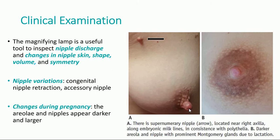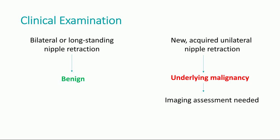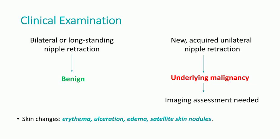Don't forget about the changes that occur during pregnancy, as in this picture where a darker areola and nipple with prominent Montgomery glands might be seen due to lactation. Characteristically, a bilateral or long-standing nipple retraction is benign, while the presence of an acquired unilateral nipple retraction implies an underlying malignancy and should be evaluated with imaging techniques. Nipple skin changes such as erythema, ulceration, edema or satellite skin nodules might also be encountered.